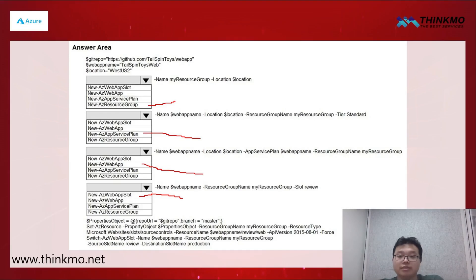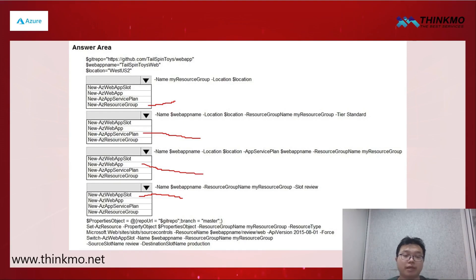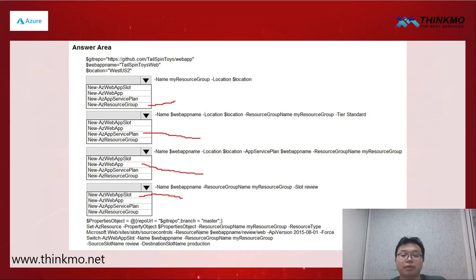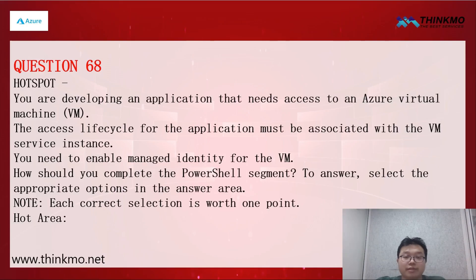Basically, this question is just asking you to put things in the correct order. It's really about arranging the overall creation steps in the correct sequence, because all four options contain the same four choices. What they're testing here is your ability to put them in the right order. That's our question 67.